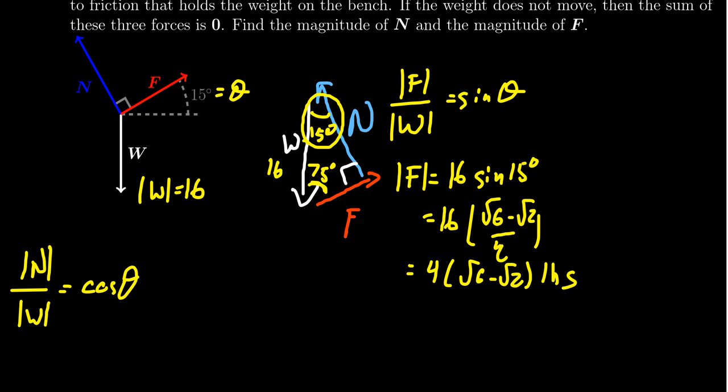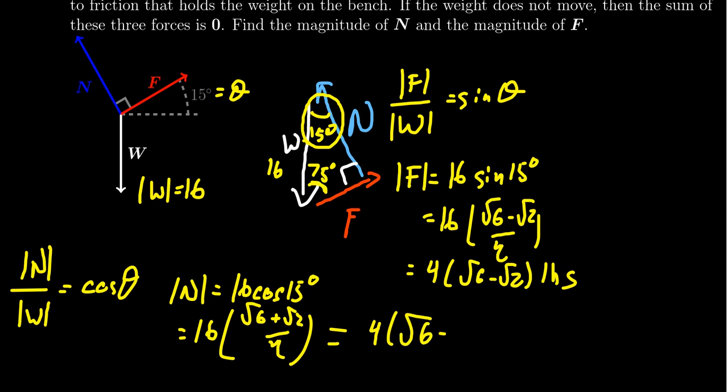The magnitude of the normal force equals 16 times cosine of 15 degrees, which is the same as sine of 75 degrees. That's 16(√6 + √2)/4, which simplifies to N = 4(√6 + √2) pounds. This finds our magnitudes.